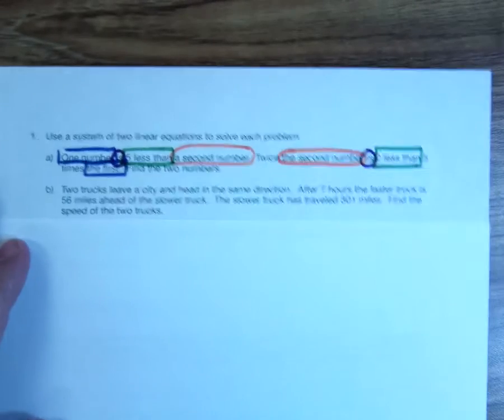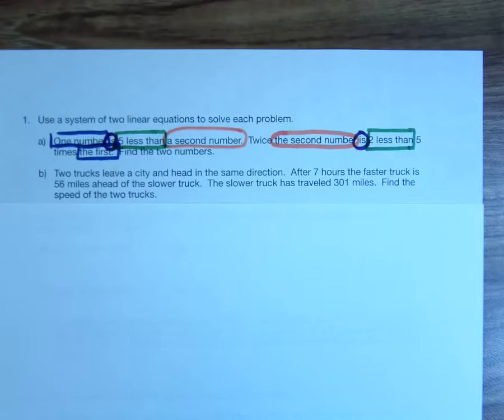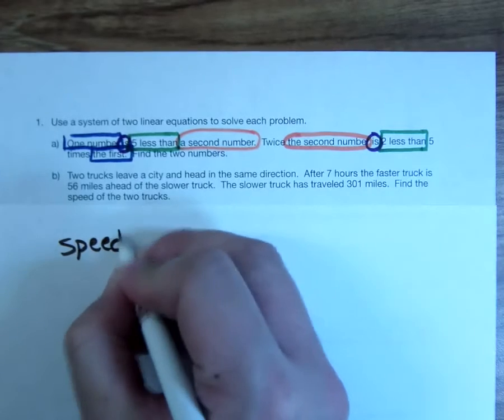Let's move on to something a little more challenging. Let's take a look at the next question. Two trucks leave a city and head in the same direction. One truck is traveling faster than the other. After seven hours, the faster truck is 56 miles ahead of the slower truck, and the slower truck has gone 301 miles. What's the speed of the trucks? So if I told you I drove 120 miles and it took me two hours, how fast was I going? You divide your distance by your time. Speed is distance divided by time.